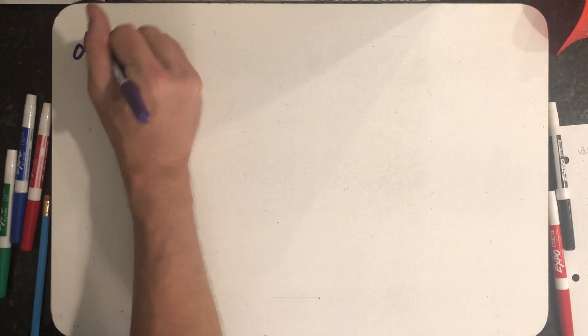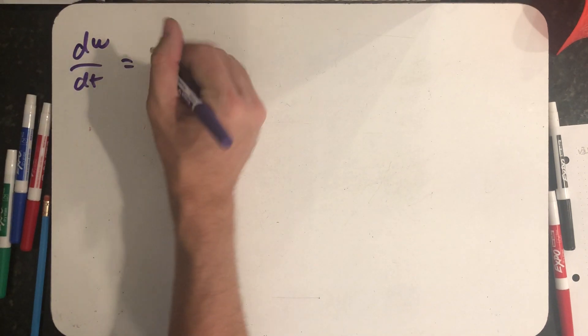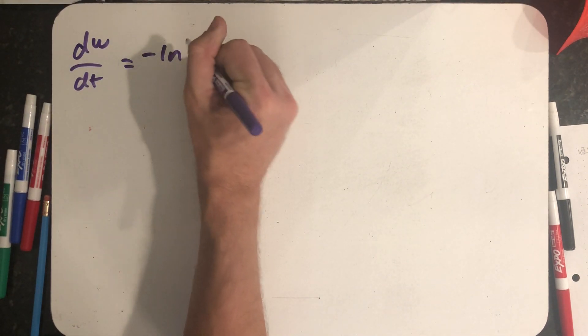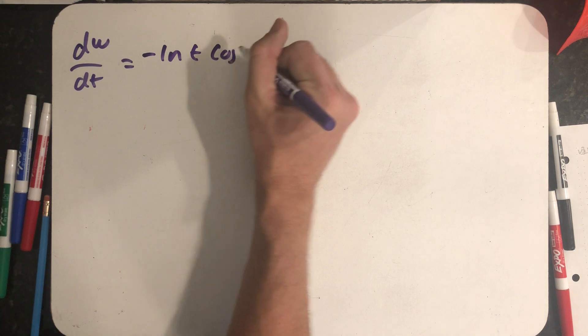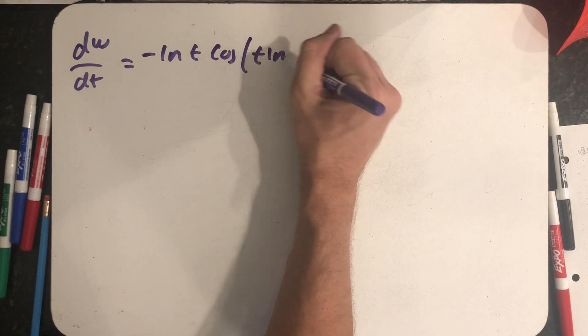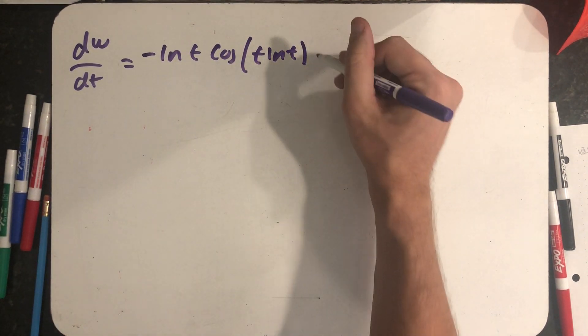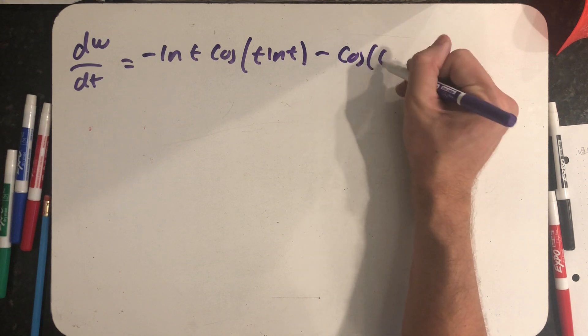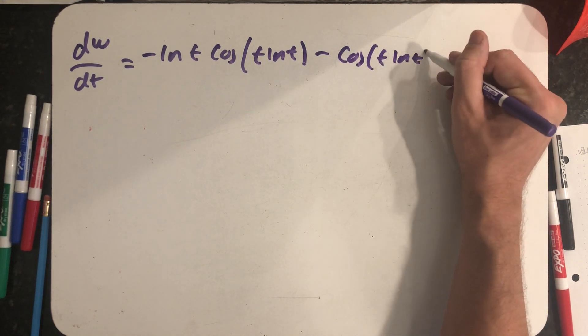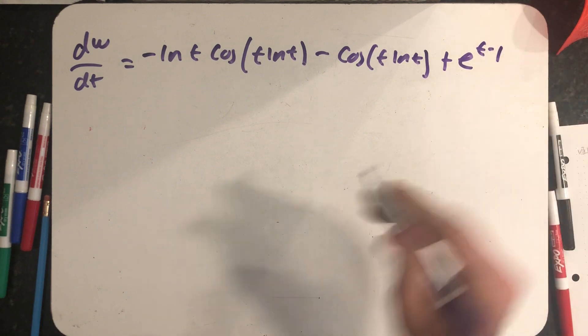So writing that all out just a little bit more neatly, I have minus the natural log of t times cosine of t times the natural log of t, minus cosine of t times the natural log of t, plus e to the t minus one.